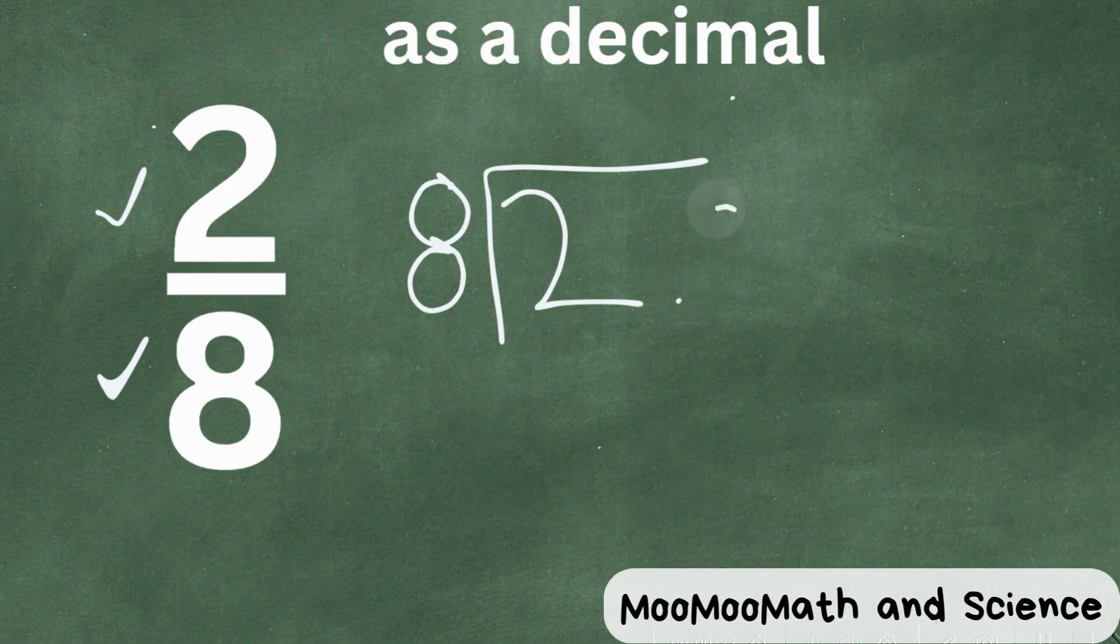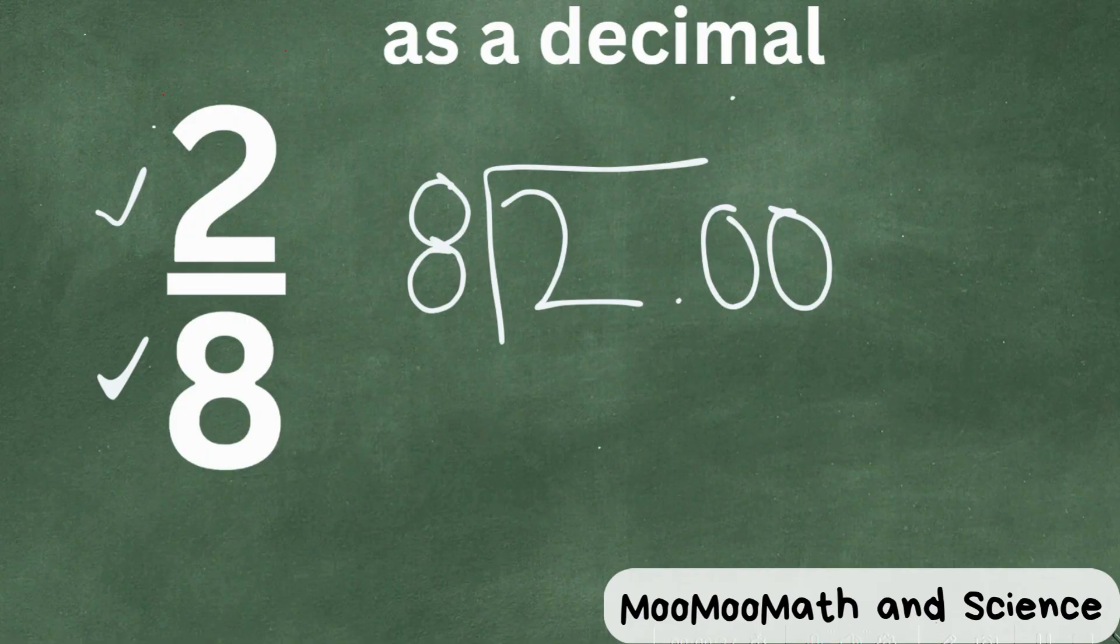Let's place a zero and add, let's write a decimal and add some zeros. Now eight is larger than two, so we're going to go ahead and write a zero here, but eight will go into 20.